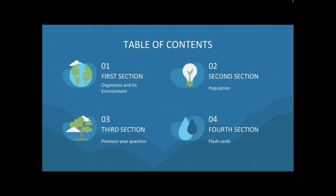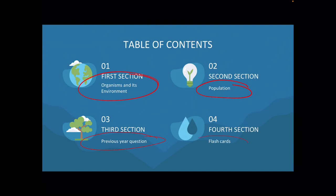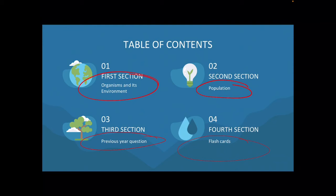Before we start, let's see the table of contents. The first section is organism and environment, the second section is population, the third section covers previous question papers, and the fourth section is a flash cut — where we revise the entire session in 15 minutes.